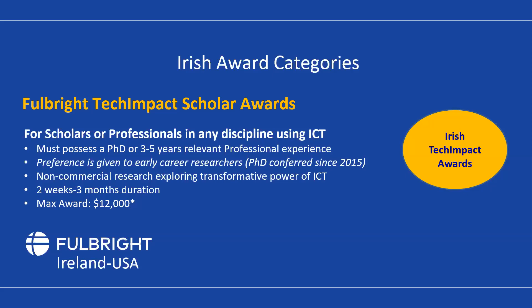The Tech Impact awards are shorter-term — a minimum of two weeks and a maximum of three months. They're geared at early career professionals, requiring a PhD or three to five years of relevant professional experience, with preference given to early career researchers. These are for non-commercial research exploring the transformative power of ICT. While you need to apply technology to your field, it is quite broad in terms of disciplines — you can apply from any discipline as long as you're exploring how ICT is applied.